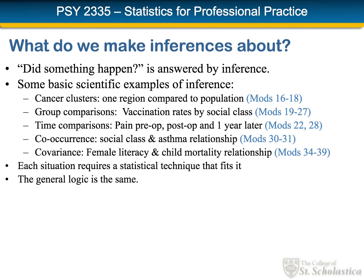The notion of a cancer cluster — where one region compared to the population seems to have more cancer than would be expected — asks: is there really something going on, is there an extra number of cancer cases? Often we want to compare groups, such as how often people have their children vaccinated across social classes from the elite upper class to the working class. We might also look at the same group across time, for instance the level of pain pre-op, post-op, and one year later for a hip replacement patient.